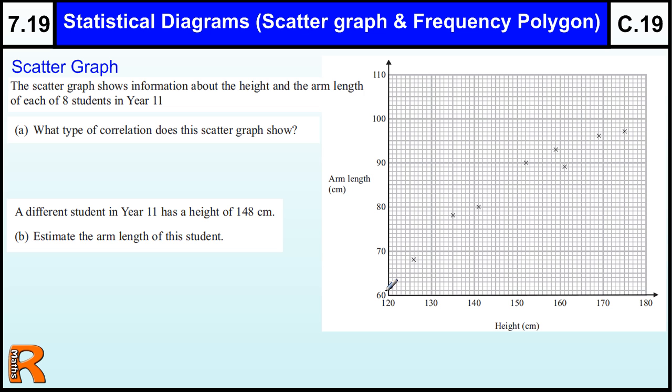This point represents somebody that was a height of 126 and an arm length of 68. We've got 1, 2, 3, 4, 5, 6, 7, 8 people here.